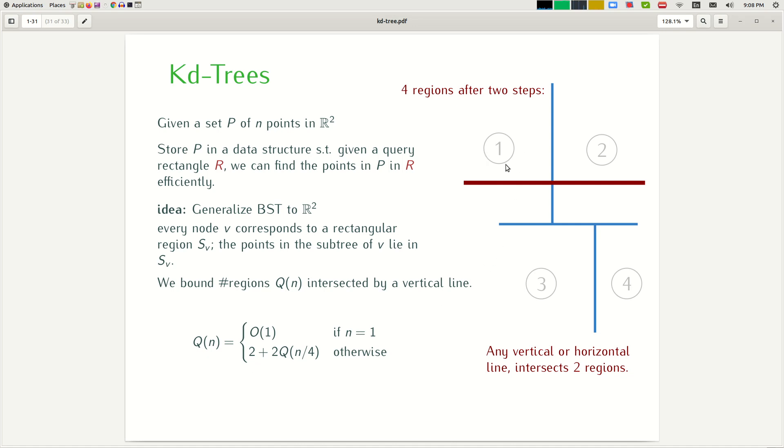Because each one of these regions have roughly a quarter of the points left. And out of these four regions, I intersect two of them. So I have four regions, I intersect two out of four. So that's the two here. And then I have a recursion into two of the subproblems. It doesn't matter which one. It's either one and two, one and three, two and three, two and four, et cetera. It will always be at most two. So therefore, this is the recursion for how many regions a horizontal or vertical line segment can intersect.